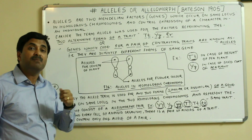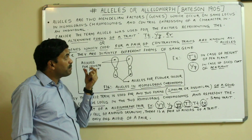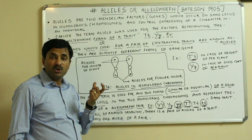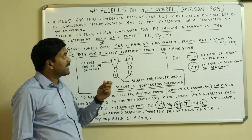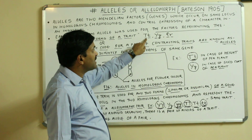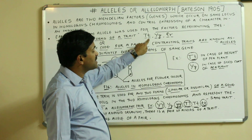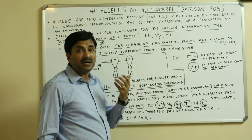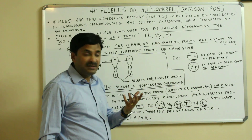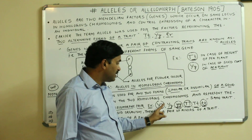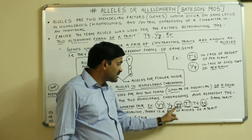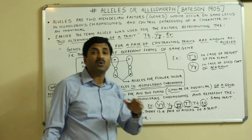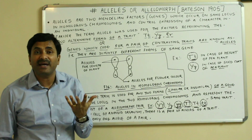Sometimes alleles may represent a pair of similar traits. It is not necessary that only capital T/small t, capital Y/small y, or capital R/small r are alleles. It is also possible that capital Y capital Y, small y small y, or small t small t also represent an allele.